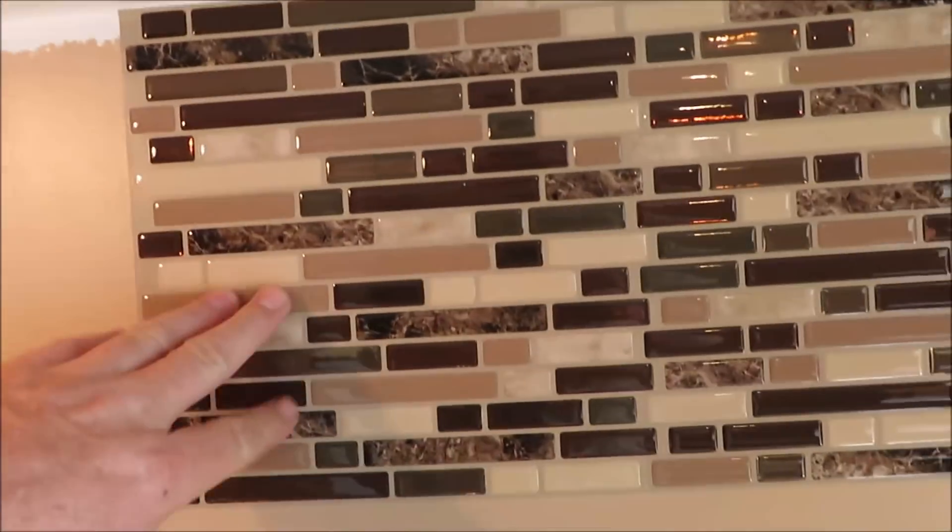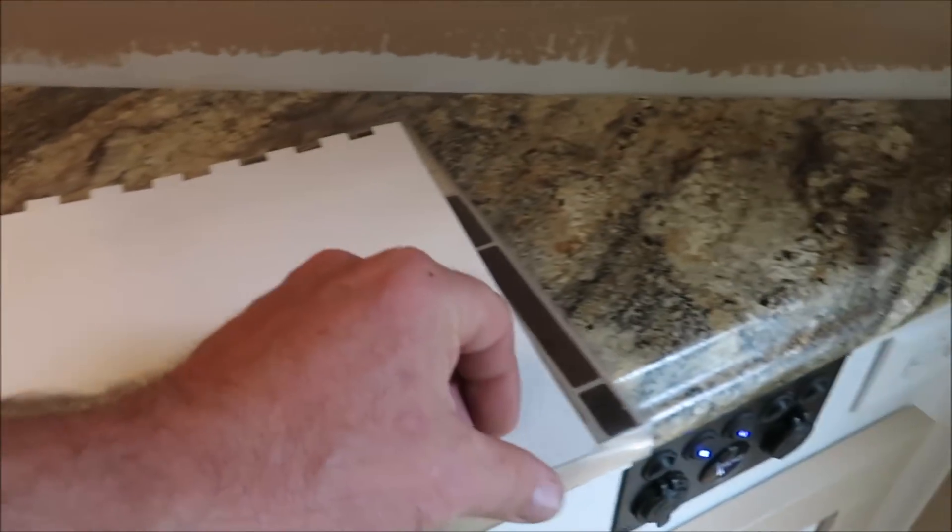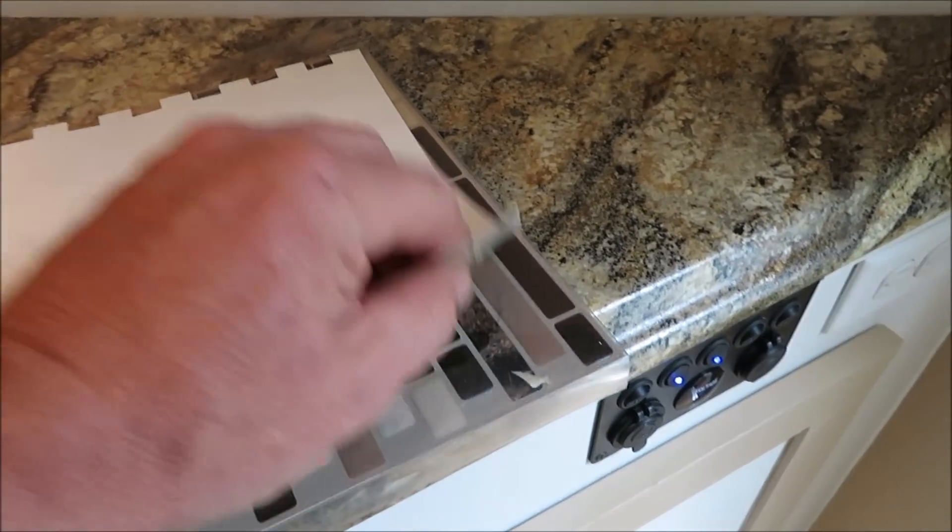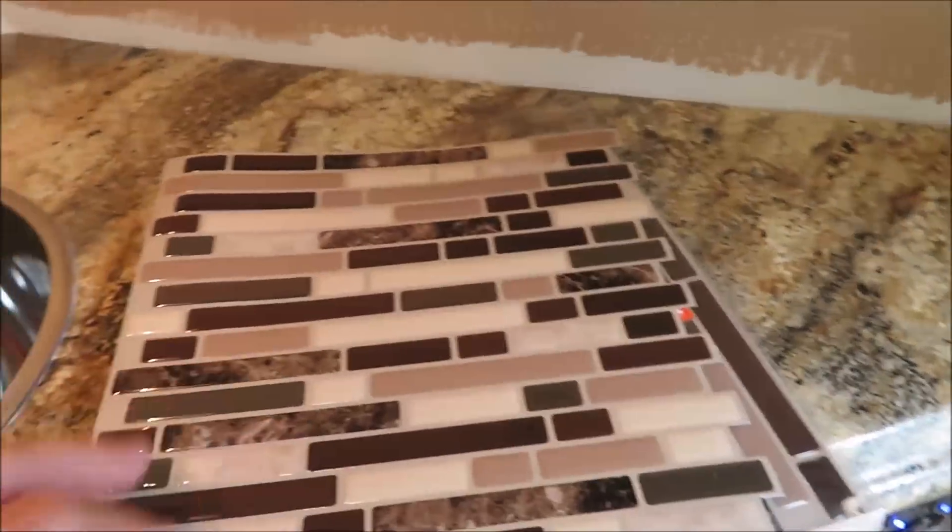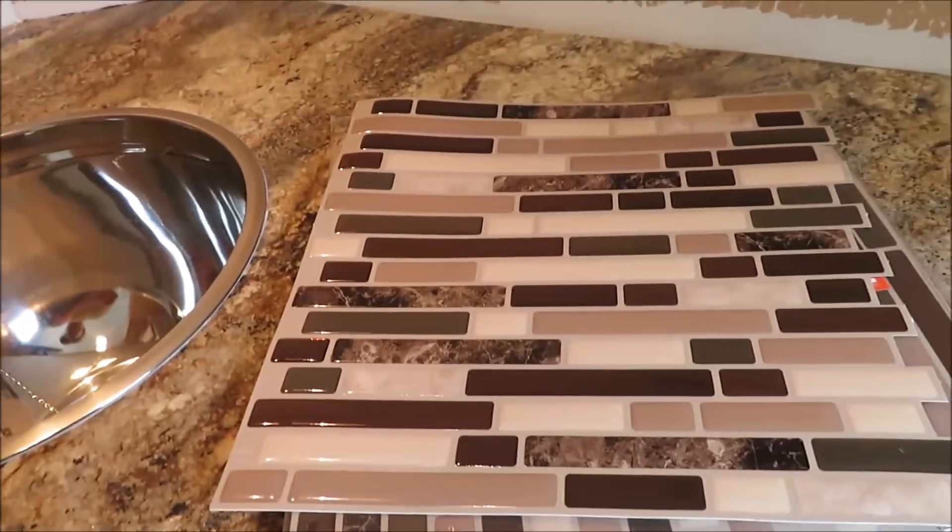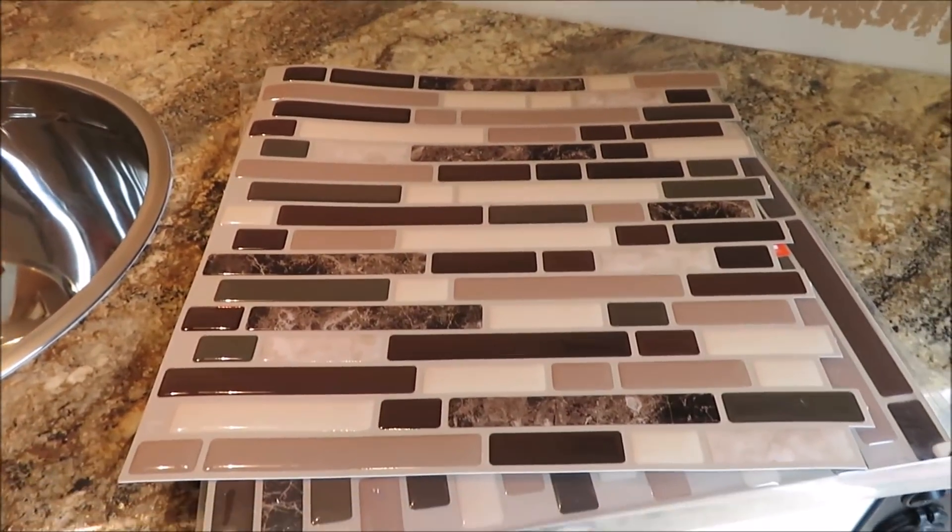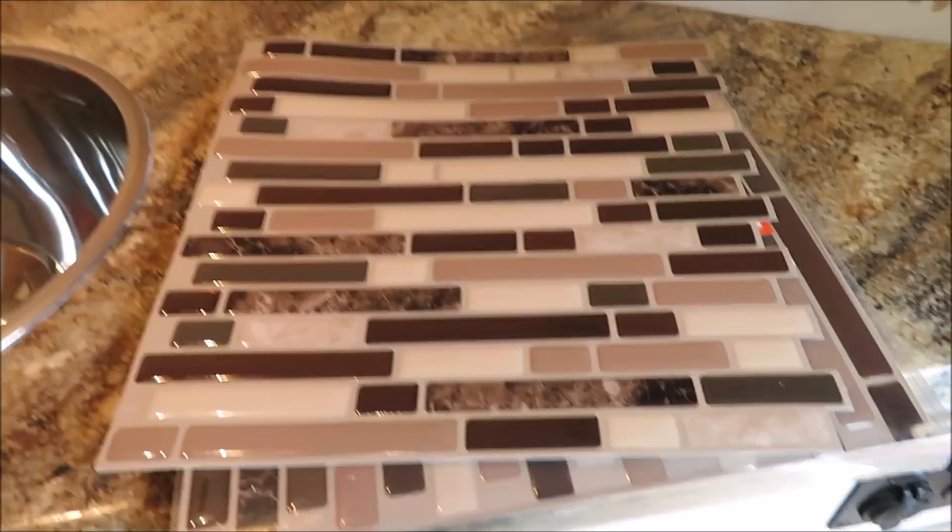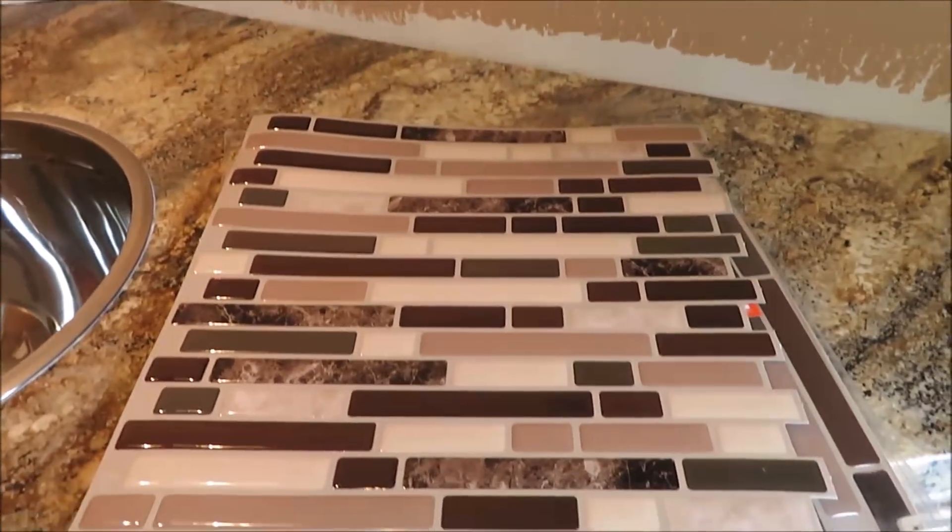These little tiles we got from Home Depot and they're just a sticky tile. I'll show you what one looks like. There's not much to it. Just got a little backing on it. You just peel it off. It's just like a decal and you stick it to the wall which is very easy to work with. And that's what we're going to be putting on the back wall.